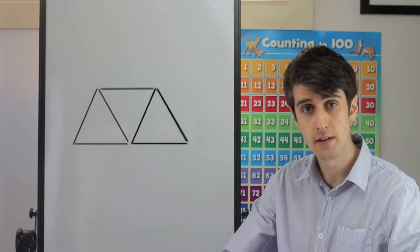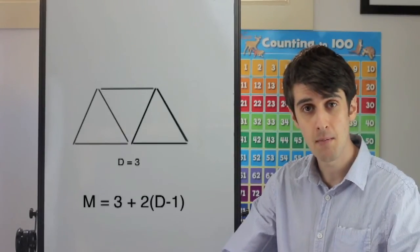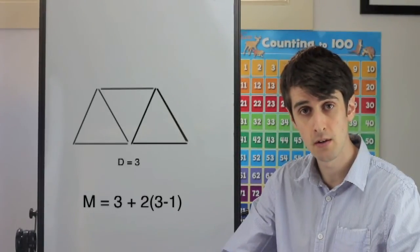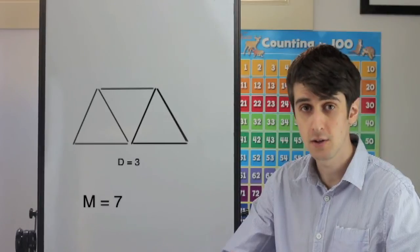For the third diagram, where d equals three, then m will equal three plus two times three minus one, which will give us seven. Once again, correct.